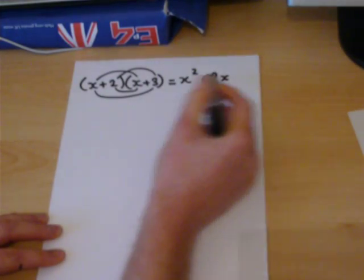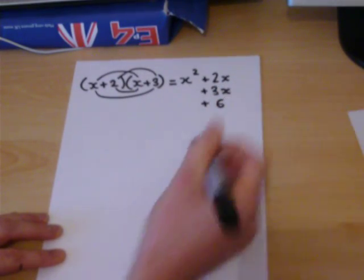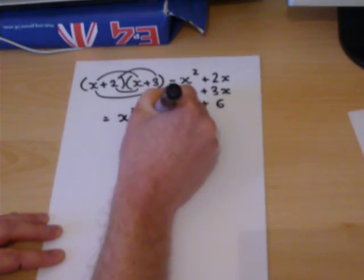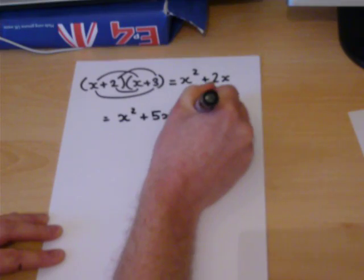So we have an x squared, a 2x, a 3x, and a 6. We can write that down as x squared plus 5x plus 6.